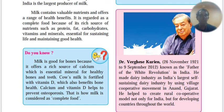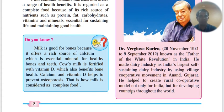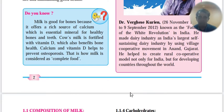Dr. Varghese Kurian was the father of the white revolution in India. He made the dairy industry India's largest self-sustaining dairy industry by using a village cooperation movement in Anand, Gujarat. He helped create a rural cooperative model not only for India but for developing countries throughout the world.